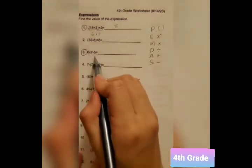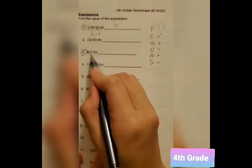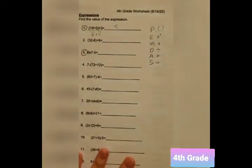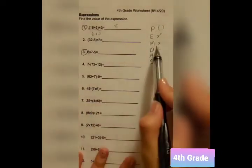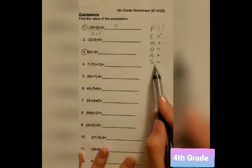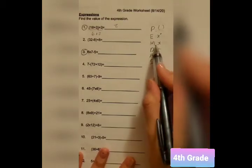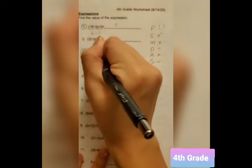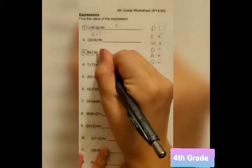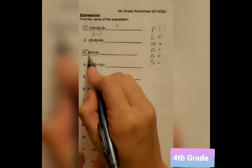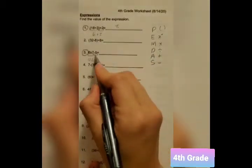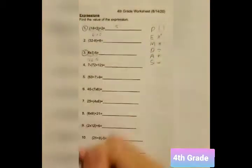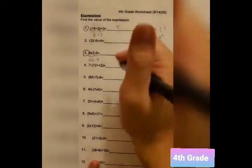For number 3, we have no parentheses. However, we have 6 times 7 minus 5. And if you look at our PEMDAS, multiplications comes before subtraction. And so, we'll know that we've got to do this first. And then we'll do this second. So, if we do 6 times 7, we'll be getting 42. And we'll just bring this down, minus 5. And our answer would be 37.